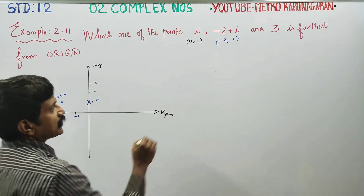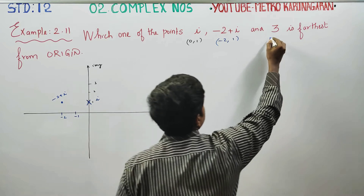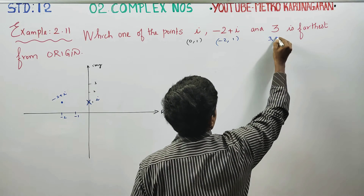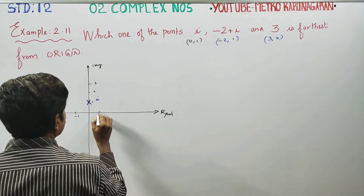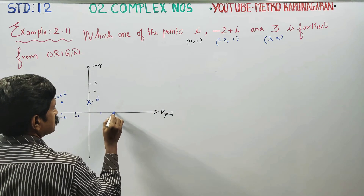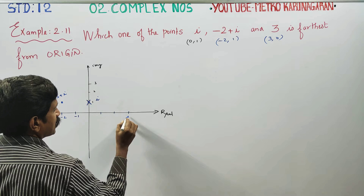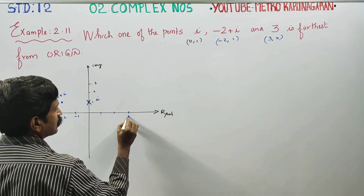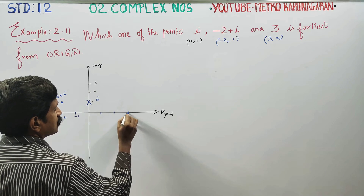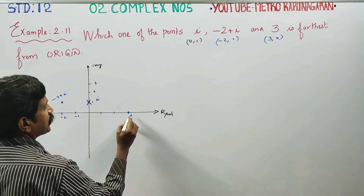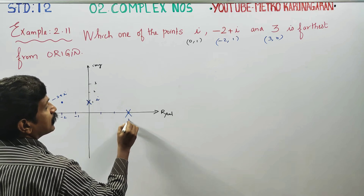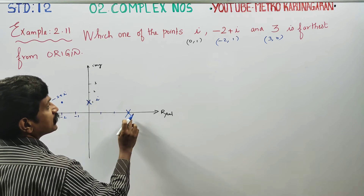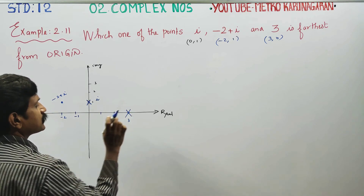The third point is 3, which is the real number 3. On the real axis, this is 1, this is 2, this is 3. So the third point is 3, plotted at (3, 0).